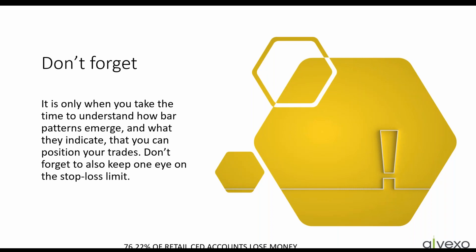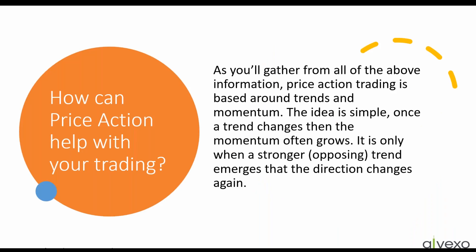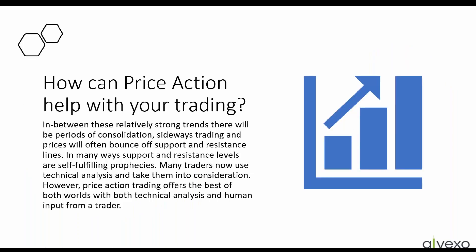It's only when you take the time to understand how patterns emerge and what they indicate. Price action trading is based around trends and momentum — the idea is simple. Once a trend changes, the momentum often grows. It's only when a stronger opposing trend emerges that the direction changes again. In between these relatively strong trends are periods of consolidation, sideways trading, and prices will often bounce off of support and resistance lines.